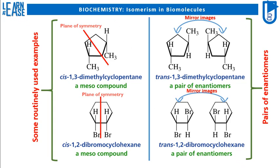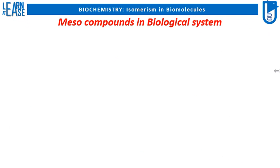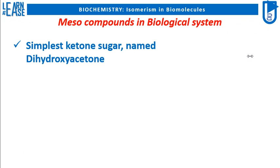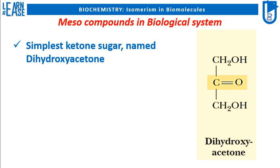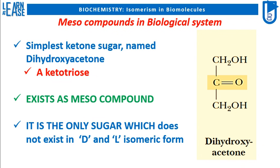An excellent example of a meso-compound in biological systems is the simplest ketone sugar, named dihydroxyacetone, which is a ketotriose. Dihydroxyacetone exists as a meso-compound and is the only sugar which does not exist in D and L isomeric form.